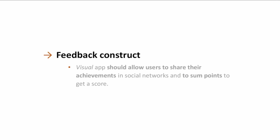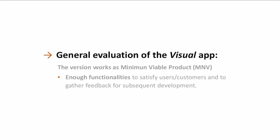The Feedback construct functionalities should be reviewed, as it seems important that the Visual app allows users to share their achievements in social networks and to earn points or a score. The general evaluation of the Visual app indicates that the current version works as a minimum viable product, meaning it carries just enough functionalities to satisfy users and to gather feedback for subsequent development.